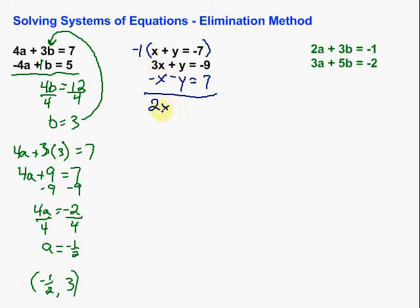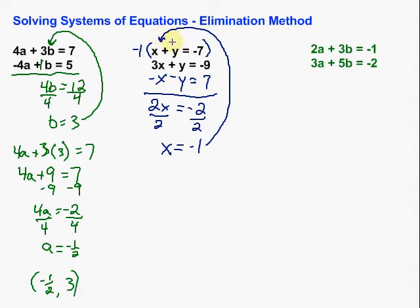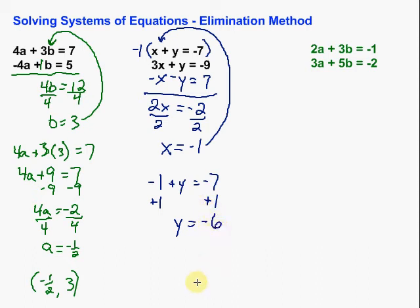Negative 1 times x would be negative x. Negative 1 times y would be negative y. And negative 1 times negative 7 would be positive 7. Now I have opposites in my y's, so when I add the two equations together, the y's are going to cancel out. We have 3x minus x, which gives us 2x, plus y minus y — that goes away — equal to negative 9 plus 7, which is negative 2. Dividing both sides by 2, we get x equals negative 1. Now let's put that back in for x. We've got negative 1 plus y equals negative 7. Adding 1 to both sides, y equals negative 6.